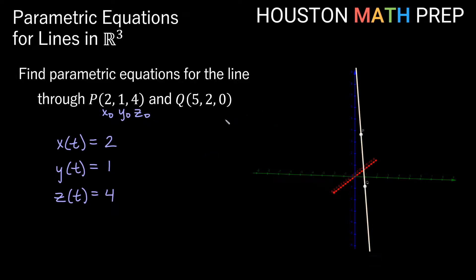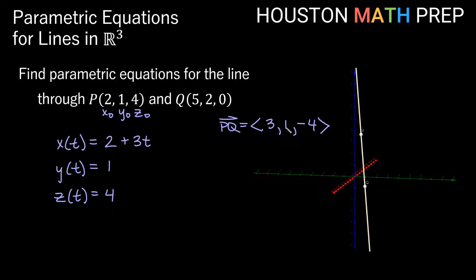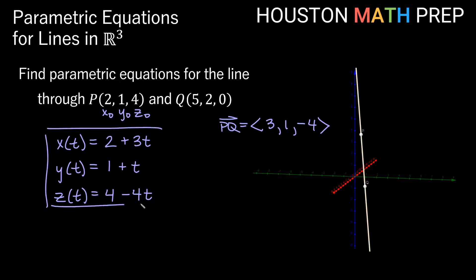The vector PQ goes from P to Q, which we find using Q minus P. So 5 minus 2 gives us 3 for the x component, 2 minus 1 gives us 1 for the y component, and 0 minus 4 gives us negative 4 for the z component. This vector points in the direction of the line, and these values give us the coefficients for our t terms: 3t in the x equation, 1t in the y equation, and negative 4t in the z equation. These three equations are our parametric equations for the line through both P and Q.